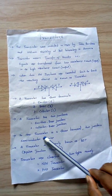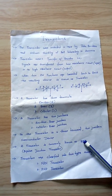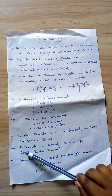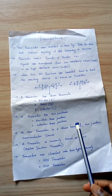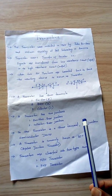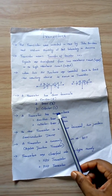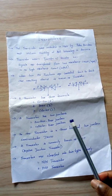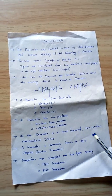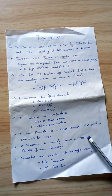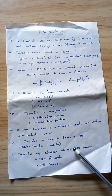The transistor is commonly known as BJT, that is Bipolar Junction Transistor. It is called bipolar because the current conduction in a transistor takes place using both majority carriers as well as minority carriers. The transistors are classified into two types: NPN transistor and PNP transistor.